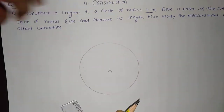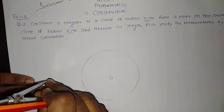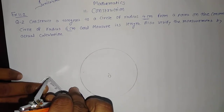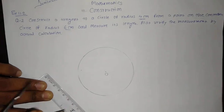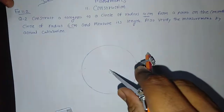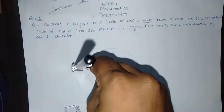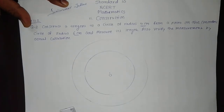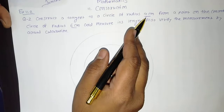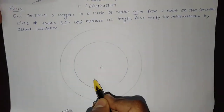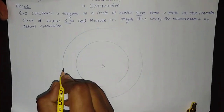Another radius is given to be 6 cm, so I will take the same center O and 6 cm as the radius. Here it is 6 cm, so with the same center and 6 cm radius I have drawn another circle. Now we have to draw the tangent to the circle of radius 4 cm from a point on the concentric circle of radius 6 cm. This is the outer circle on which we will consider one point.